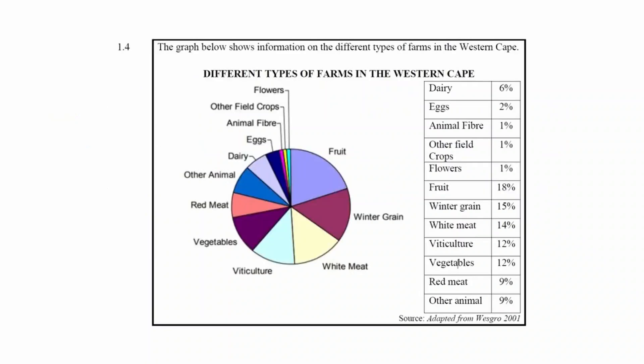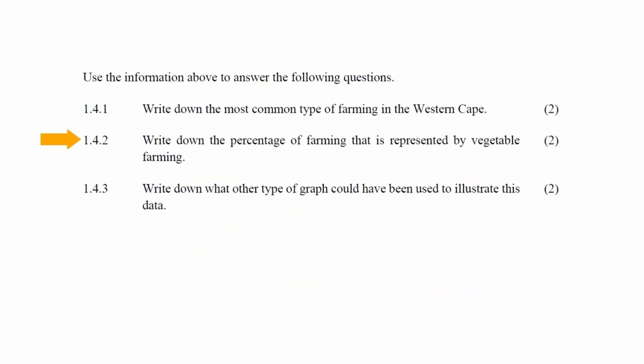From the pie chart or table, we see that the most common type of farming in the Western Cape is fruit farming. In question 142, you are instructed to write down the percentage of farming that is represented by vegetable farming.